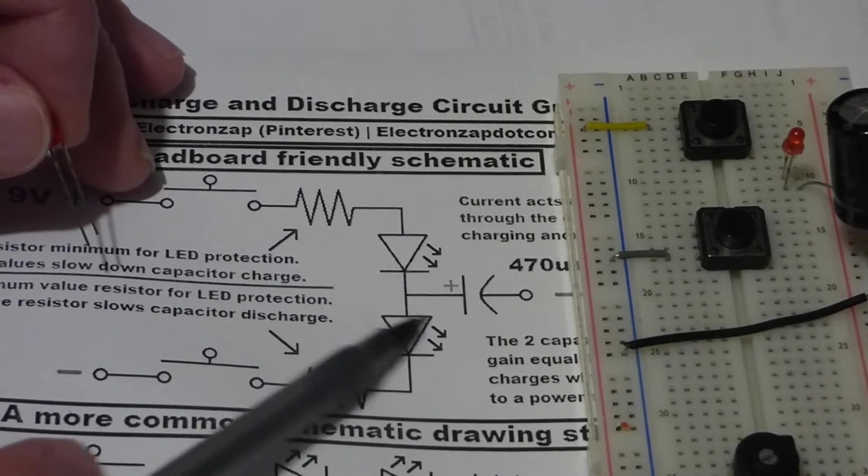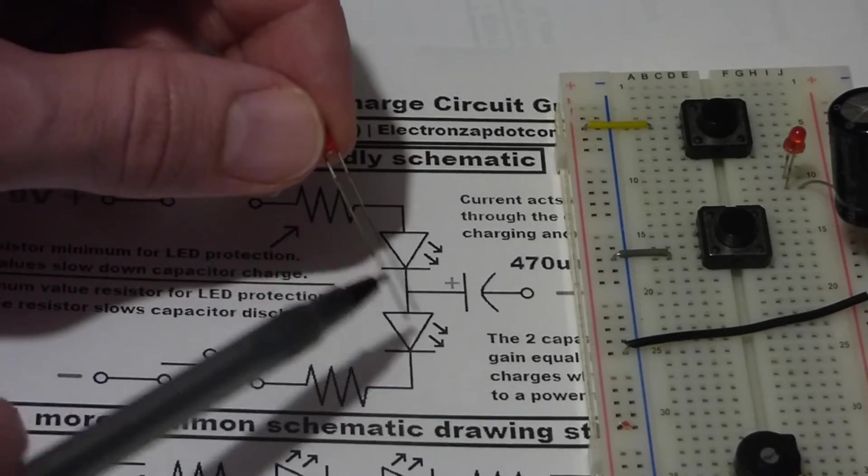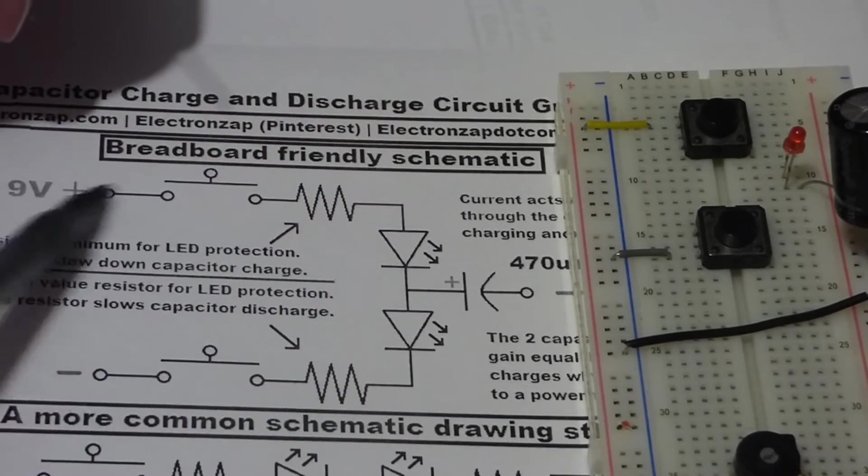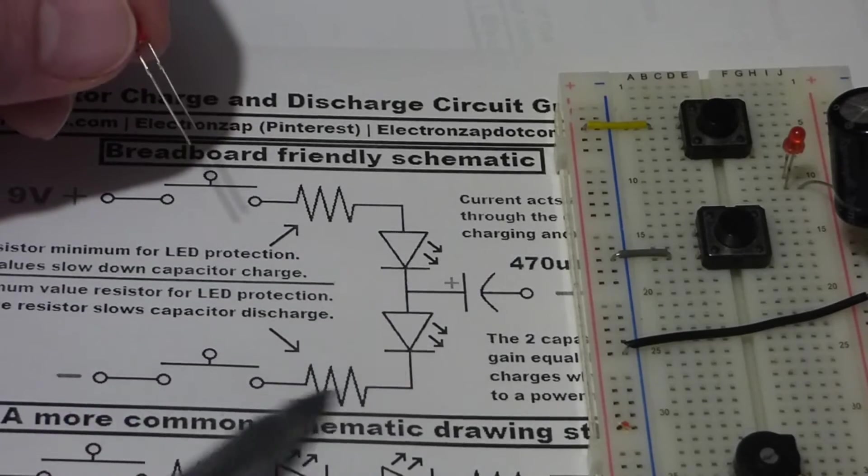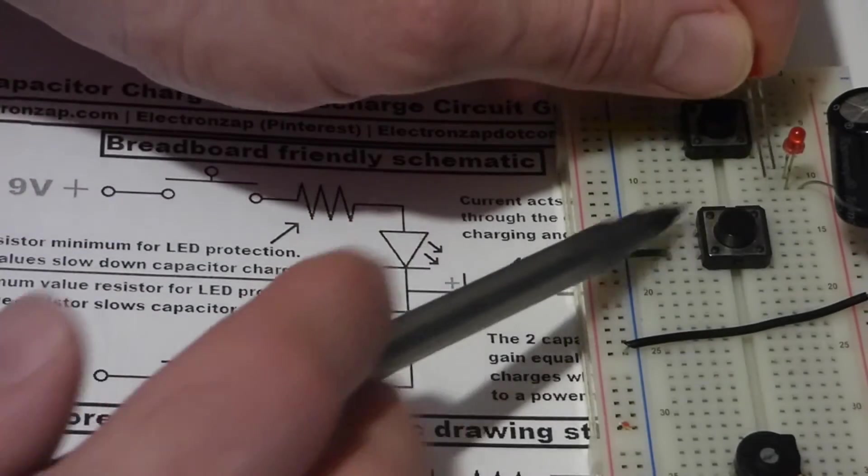So now that brings us to the next LED. As you can see here, as I said, this is the anode, the long lead of the LED which needs to be more positive. That's on the positive side of the circuit, and the short lead heads towards the switch. So in this case I'll put the long lead in the same row as the capacitor.